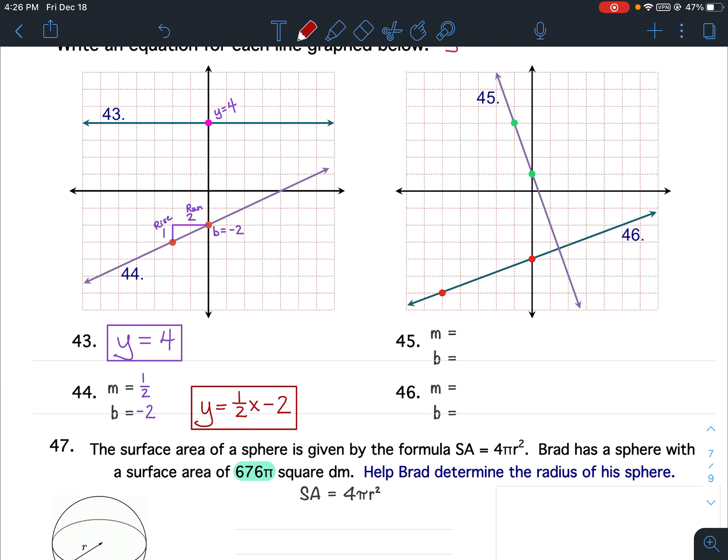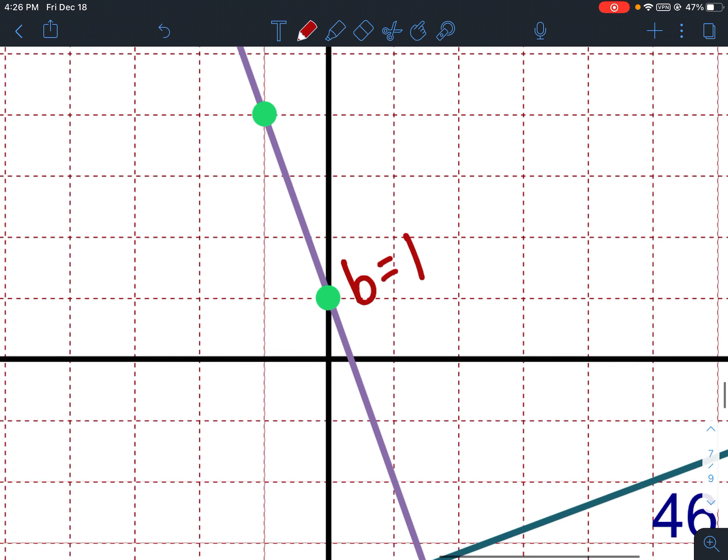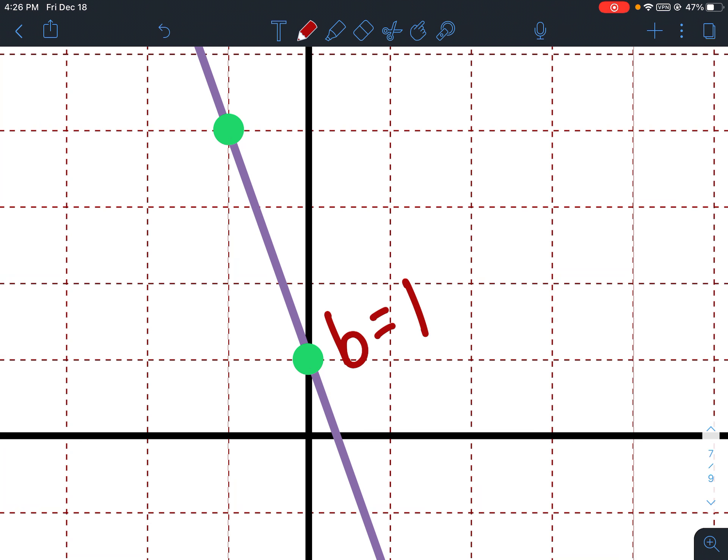Alright, for 45. 45 is a slanted line. So I'm going to start with my y-intercept. It goes up 1. My rise and my run, well, it's going downward. So my rise goes down 1, 2, 3. My rise is negative 3. And my run is 1.